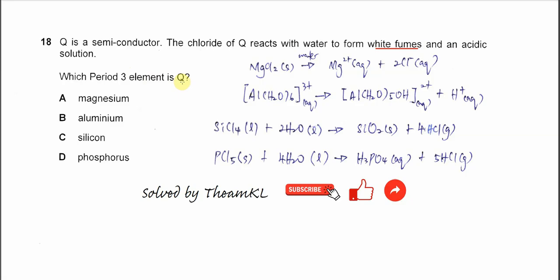Magnesium chloride will just dissolve in water to form magnesium solution and chloride solution. For aluminum chloride, once it's dissolved it will form this hexaaqua aluminum ion, a complex ion, and it will further dissociate.